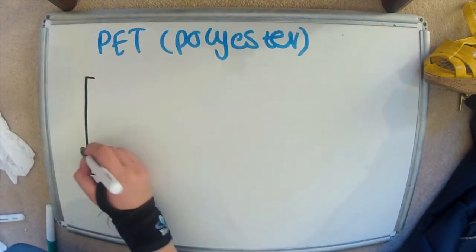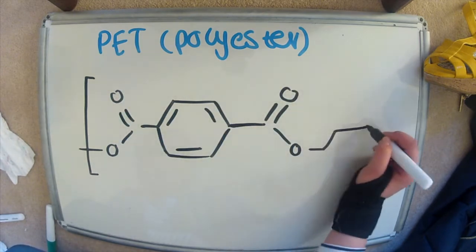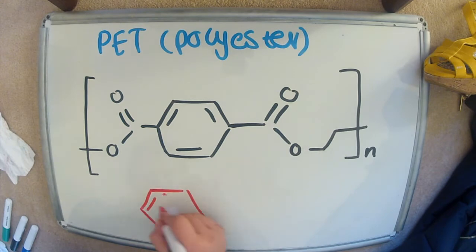So here is one unit. The monomers are dicarboxylic acid and a dialcohol.